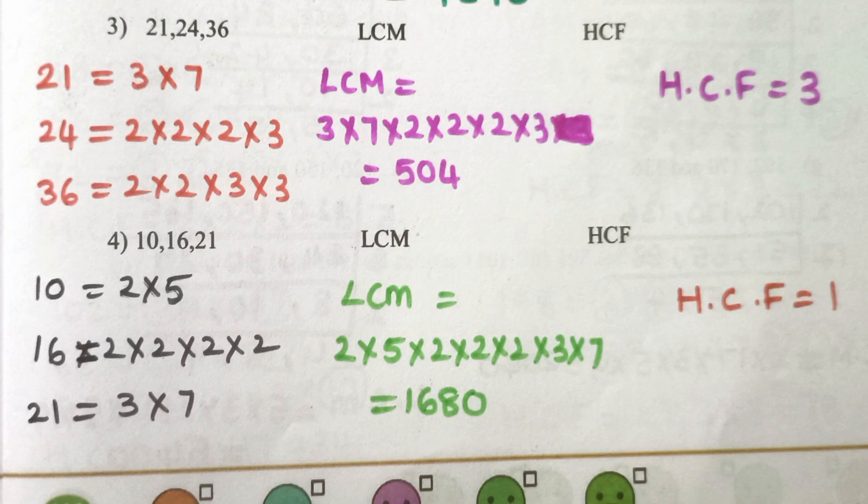Question 3: 21, 24, 36. Factorizations: 21 = 3×7, 24 = 2×2×2×3, 36 = 2×2×3×3. LCM is equal to 504, HCF is equal to 3.